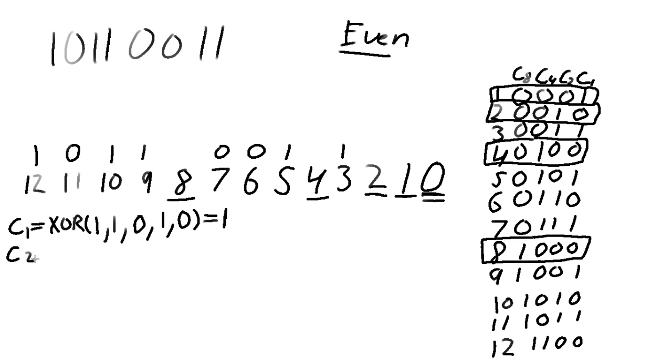Let me just go through the same process to calculate C2. So we're looking at C2. We're going to look at bits 3, 6, 7, 10, and 11. So that's 1, 0, 0, 1, 0. There's two 1s there. So there's an even number of 1s. That means our check bit needs to be a 0.